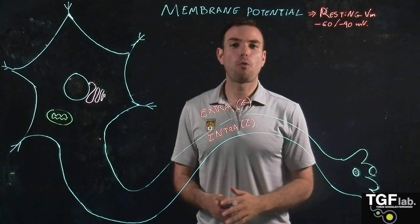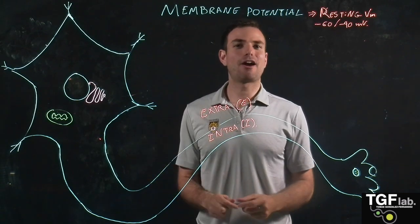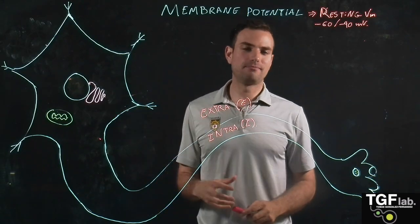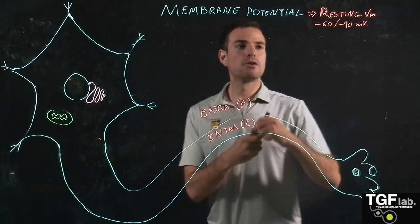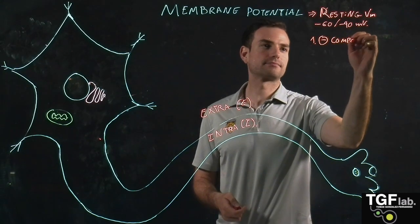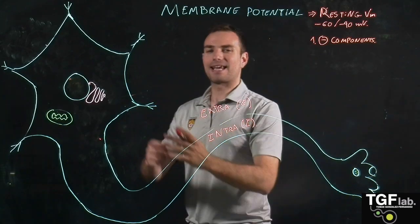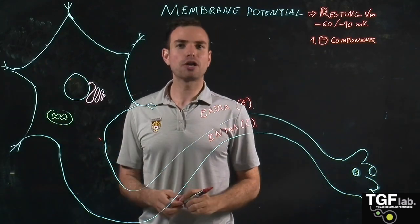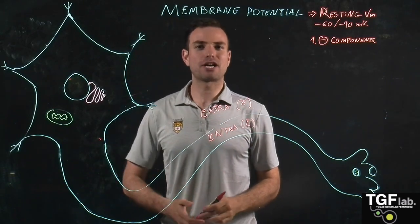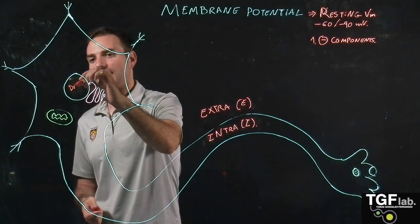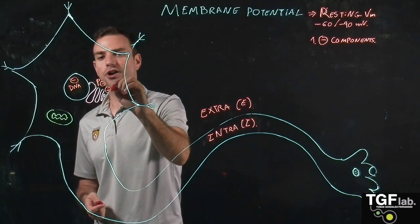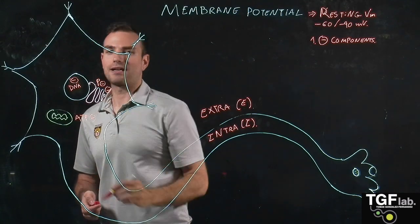Now I want to explain why the membrane potential is negative and the different reasons that influence it. The first reason is different negatively charged cell components. Inside the cell we have different components and molecules that are negatively charged and contribute to making this resting membrane potential more negative — for example, nucleic acids like DNA, some proteins, and also ATP, all of which are negatively charged.